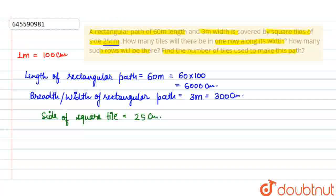Number of tiles will be in one row along the width of the path. Along the width of the path, what will it equal to? As many tiles will fit as the width of the path allows.